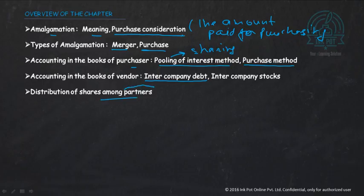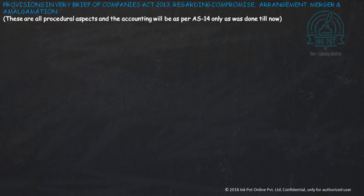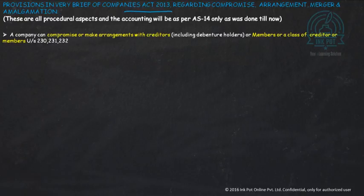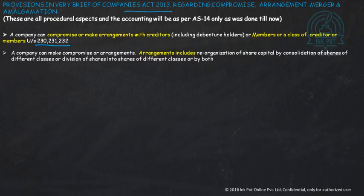As per the Companies Act 2013, a company can compromise and make arrangements with their creditors, debenture holders, members, or a class of creditors under Sections 230, 231, and 232. These are the three sections under which amalgamation is discussed. A company can make arrangements such as reducing share capital, reorganization of share capital, consolidation of shares, or division of shares into different classes.